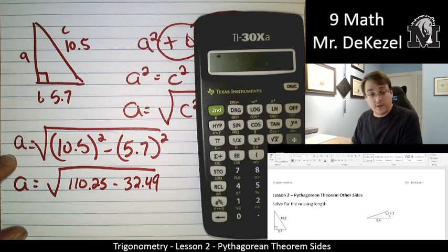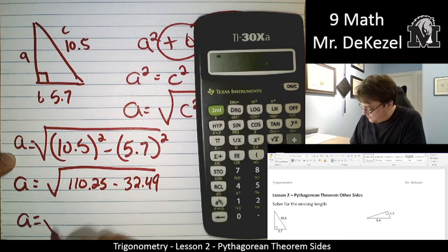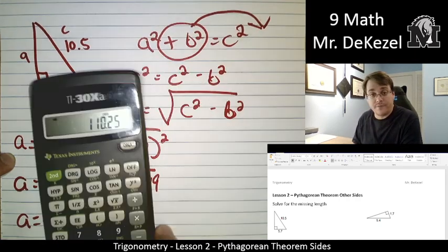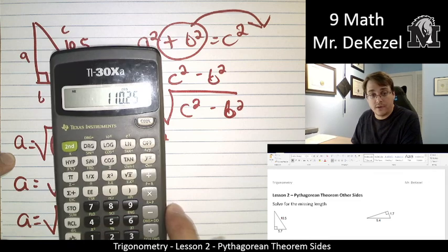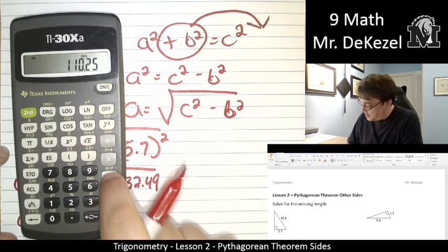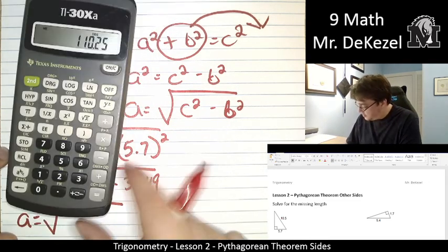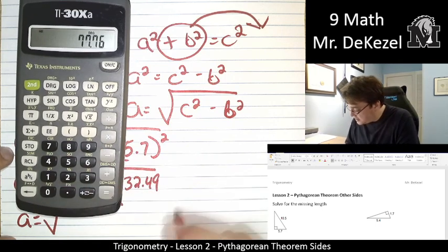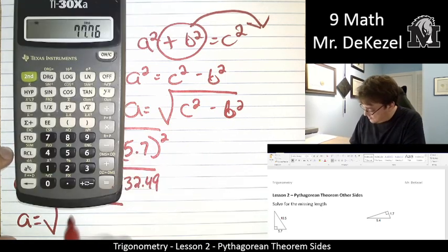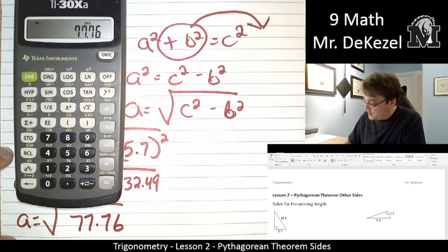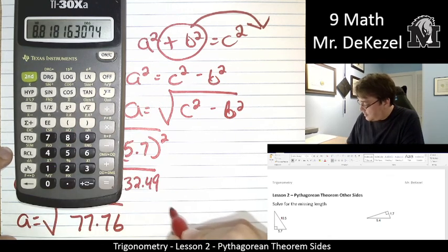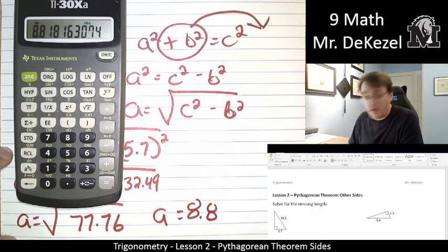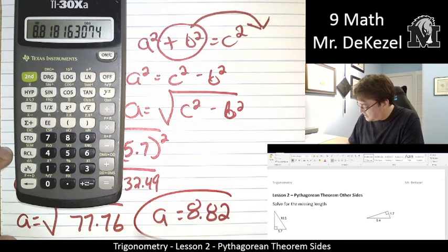We're going to go ahead and do that. We're going to record that as well. So 110.25, see that there. The light is a little bit in the way. Minus 32.49. So that's 77.76. And then we square root that. Our side A is equal to 8.82.